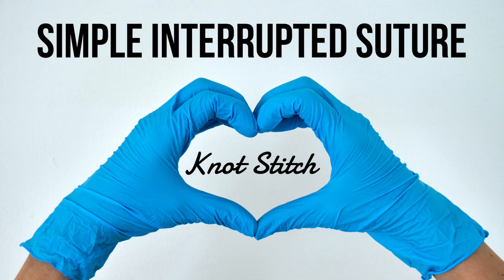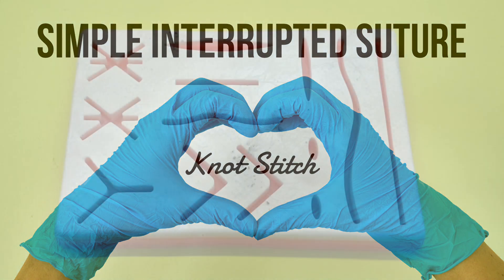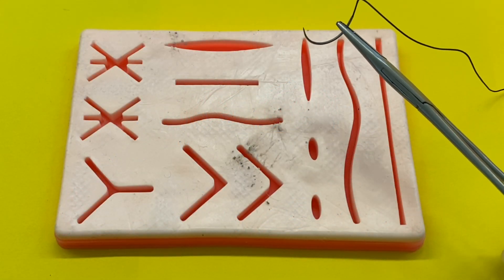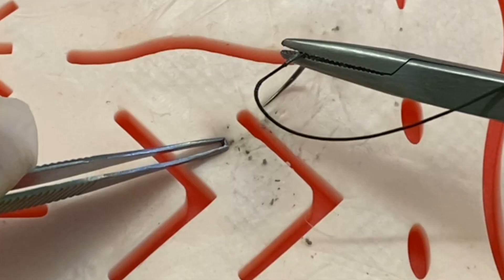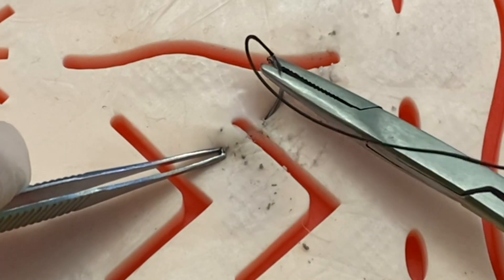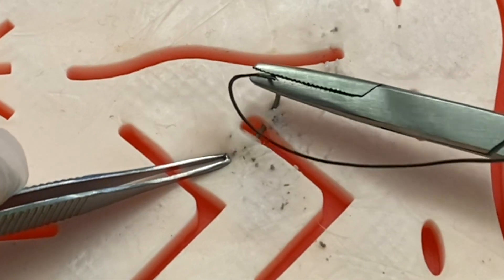Now we are ready to start our simple interrupted suture, also known as the knot stitch. Place your suture mat in front of you as shown. Grab your forceps and your needle with needle holder. The forceps are going to help you hold the skin down while you push the needle through.